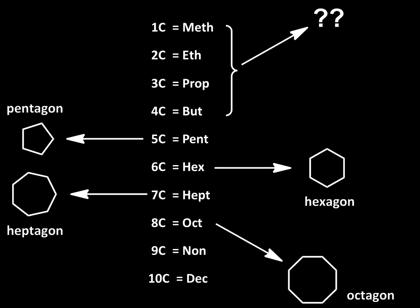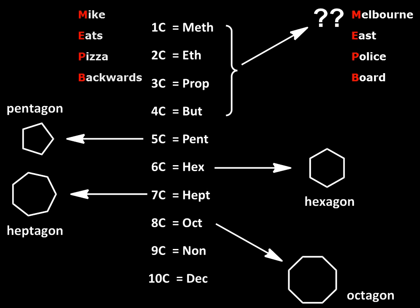The first four prefixes are less familiar or obvious. One carbon is meth, two carbons eth, three carbons prop, and four carbons but. I think the only way you're going to remember these is either by learning the names themselves, or perhaps committing an interesting mnemonic to memory. A few possibilities come to mind — you might have one of your own.